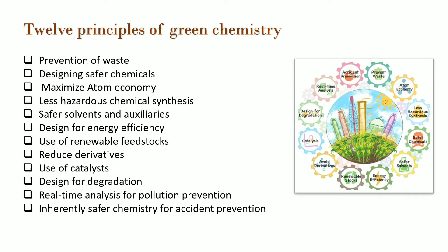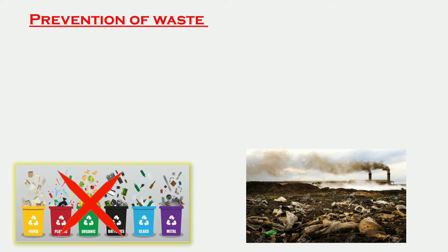The 12 principles are: 1) Prevention of waste, 2) Designing safer chemicals, 3) Maximize atom economy, 4) Less hazardous chemical synthesis, 5) Safer solvents and auxiliaries, 6) Design for energy efficiency, 7) Use of renewable feedstocks, 8) Reduce derivatives, 9) Use of a catalyst, 10) Design for degradation, 11) Real-time analysis for pollution prevention, and 12) Inherently safer chemistry for accident prevention.